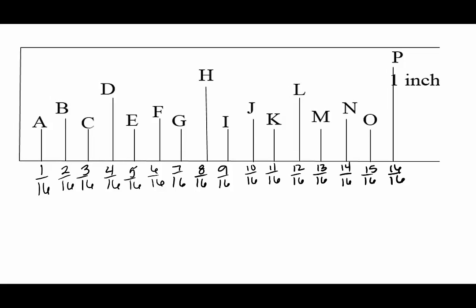Next, we're going to reduce. 1/16th cannot be reduced because 1 and 16 have no common factors, but all of the even 16ths can be. 2/16ths reduces to 1/8th. We do that by dividing the top and the bottom by 2. Reduce all of the even 16ths down one level to 8ths. You'll notice we can just count them.